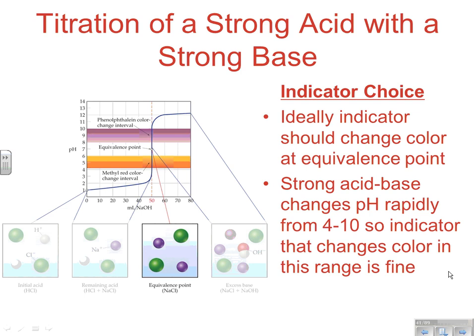One thing to briefly address is which indicator to use. If not using a pH meter, you use a substance that changes color. On the titration curve, methyl red changes color in one pH range and phenolphthalein in another — both within the region of the massive pH change near the equivalence point. So either one gives a valid endpoint. Ideally, choose an indicator that changes color at the equivalence point. In a strong acid-base titration, the pH changes rapidly from about 4 to 10, so any indicator that changes color in that range will work.